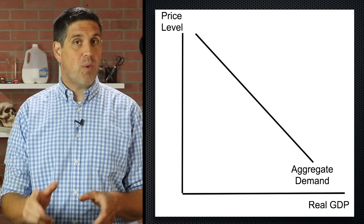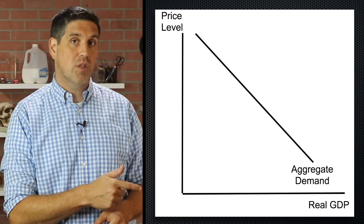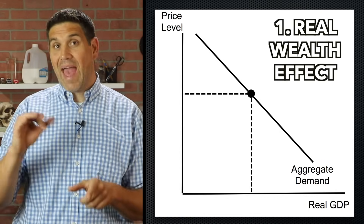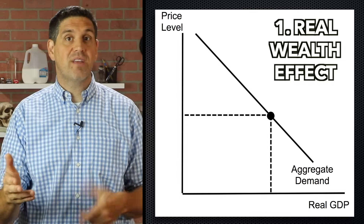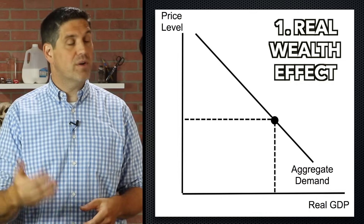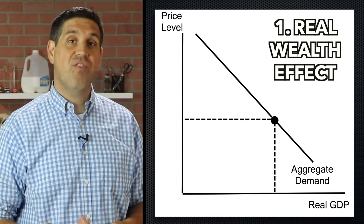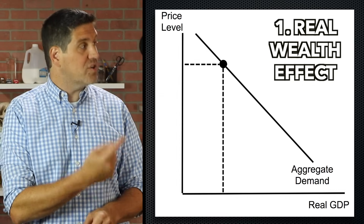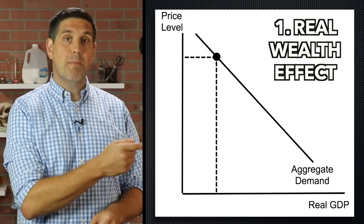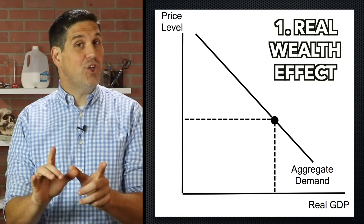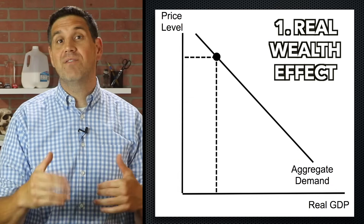There are three reasons why the aggregate demand curve is downward sloping. The first one is the real wealth effect. When price level falls, the assets of consumers have more purchasing power, so those consumers buy more stuff — your real wealth goes up when prices fall. But when price level goes up and there's more inflation, purchasing power falls for your assets and you buy less goods and services. Inflation erodes your purchasing power and gives you less real wealth. A million dollars isn't exactly a lot of money these days.